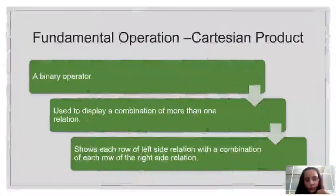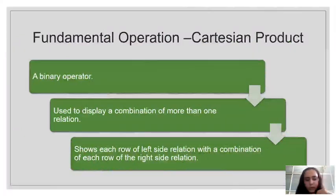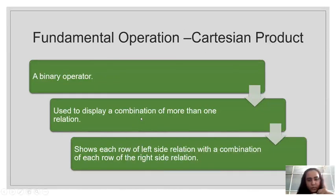The fundamental operation Cartesian product is a binary operator — it requires two relations in order to work. It's like having a multiplication or division in mathematics which requires two operands. Cartesian product requires two tables to work on and it is used to display a combination of more than one relation, showing each row of the left side relation with a combination of each row of the right side relation.